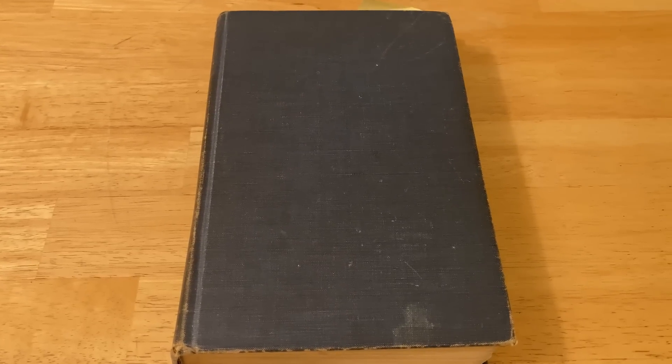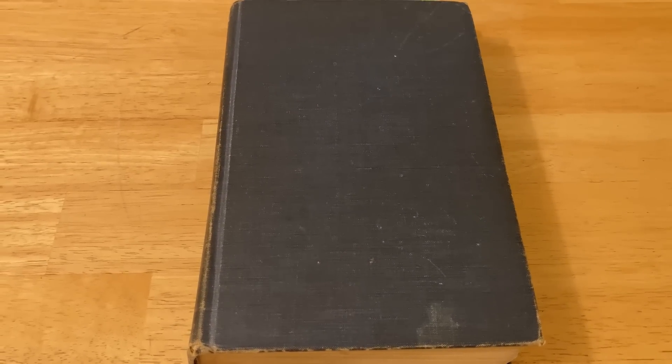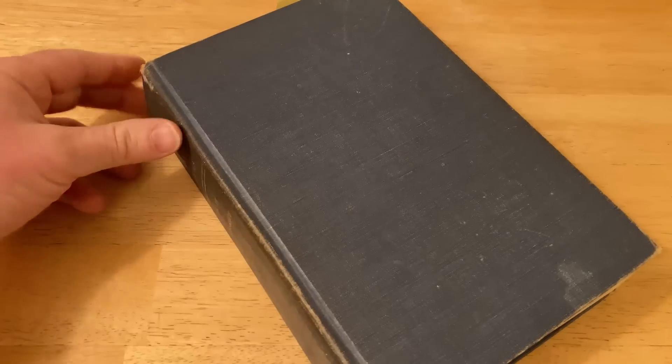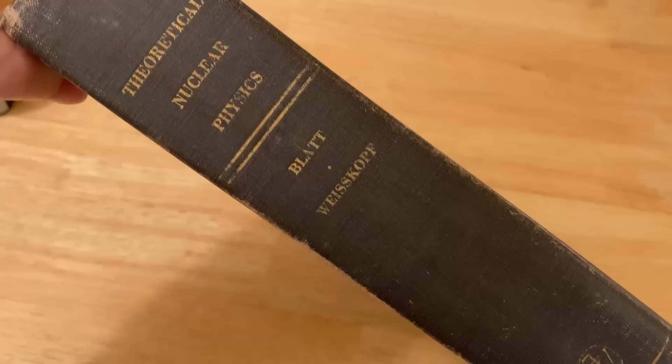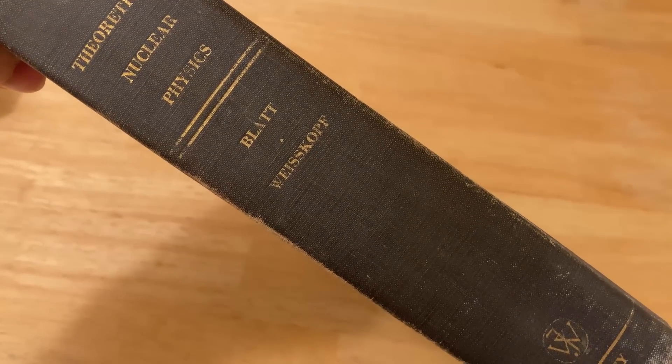In this video, we're going to be looking at a book on physics. This is a really old book on physics that came from a private collection, and it is called Theoretical Nuclear Physics by Blatt and Weisskopf.